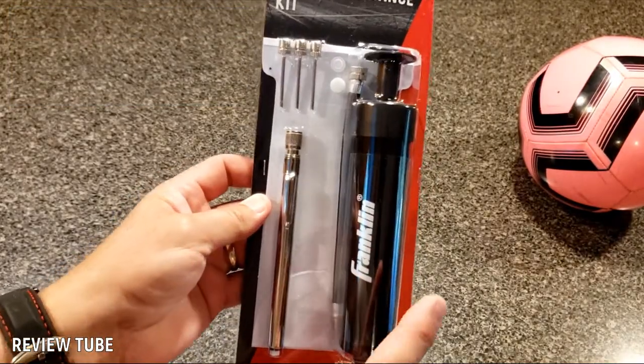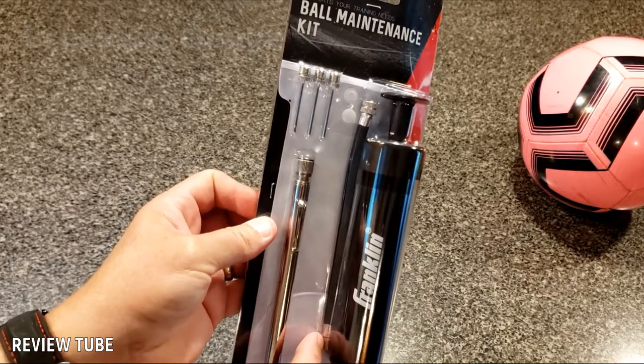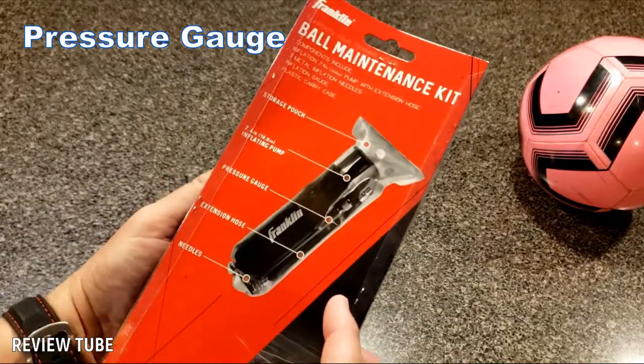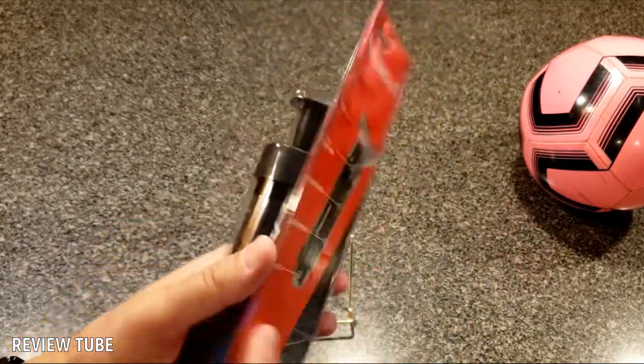Comes with the pump itself, this long black thing along the side is an extension tube, a pressure device, what do they call that, pressure gauge, and three needles. It comes also with its own pouch in the back.